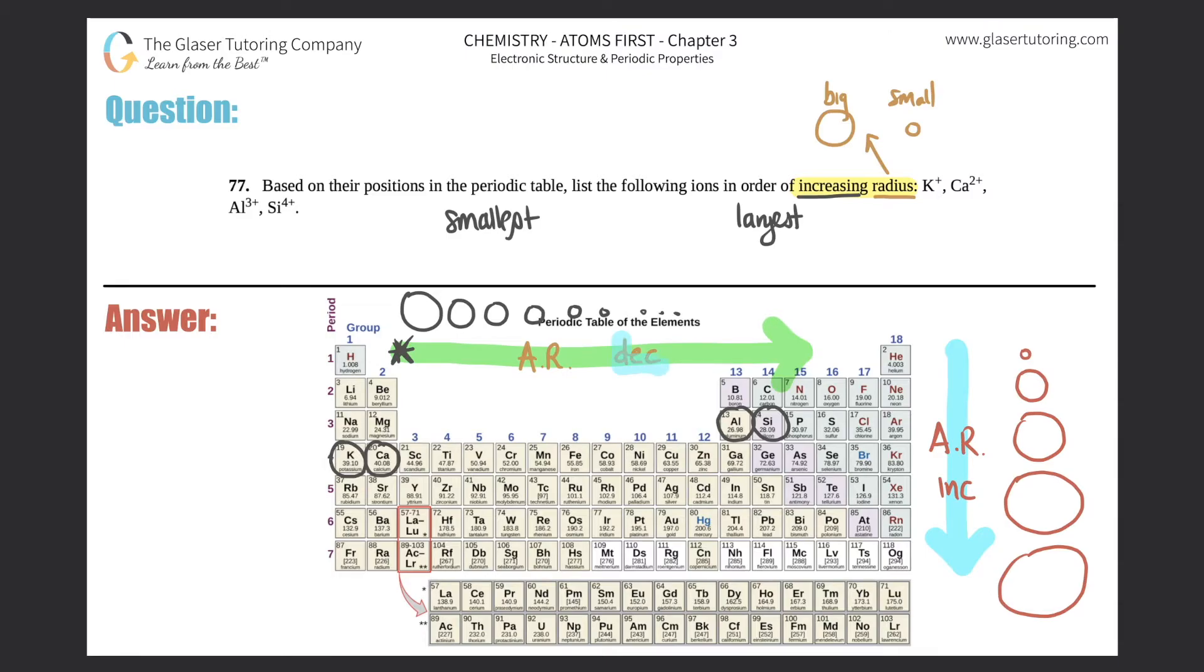And as you go across a period, what happens to your atomic radius? It decreases. So you start big on the left, you end small on the right. So it seems that technically potassium should be the biggest. Then you get a little bit smaller. Calcium gets a little bit smaller. And then now you're over here. So aluminum would be smaller than silicon. So silicon technically would be the smallest.